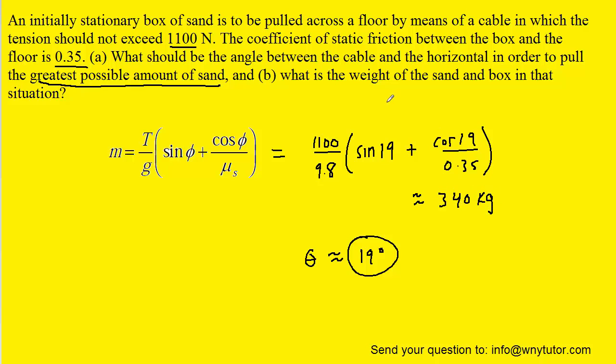The question actually wants the weight. So we recall that weight is equal to mass times g. So all we have to do is plug in the mass we just determined and multiply it by the gravitational constant. And we get approximately 3.3 times 10 to the power of 3 newtons for the weight and the correct answer to part B.